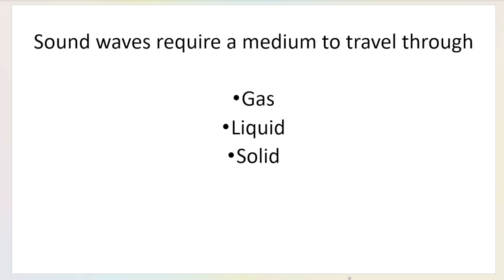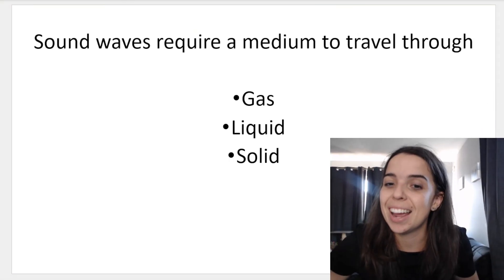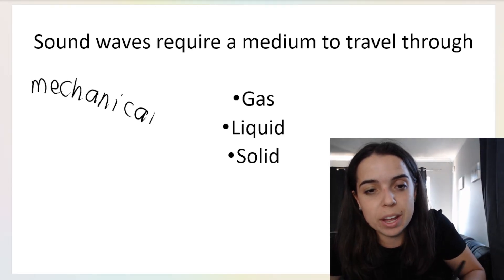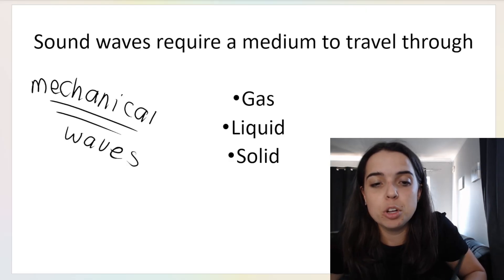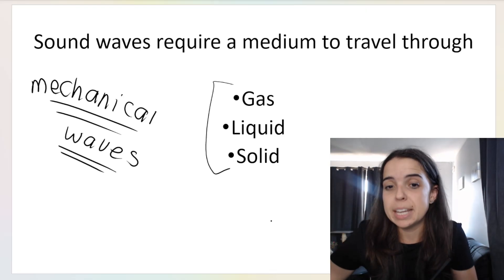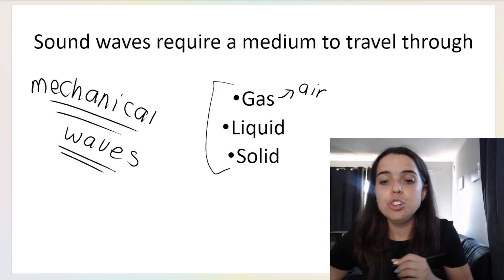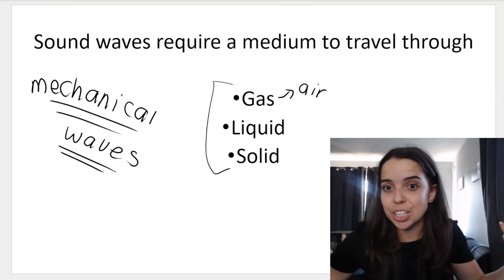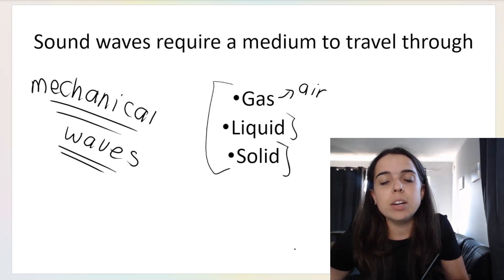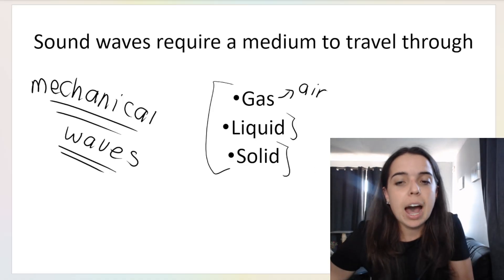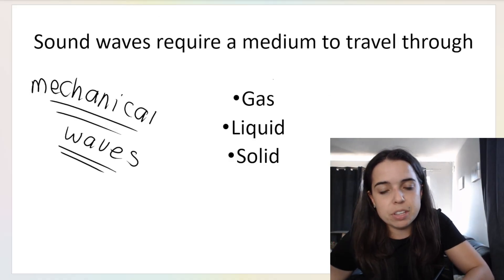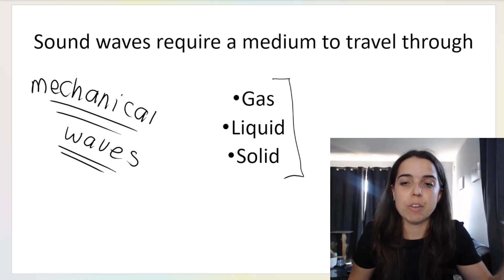Sound waves require a medium to travel through. They are mechanical waves, longitudinal waves, which means they need a medium to travel through. Here's some examples of mediums: gas, which is obviously the air around us made up of a variety of gases like oxygen, nitrogen, and carbon dioxide. We know that sound can also travel through liquids like water, and sound can also travel through a solid. Out of these three mediums, all have particles. That's why sound can travel through them.